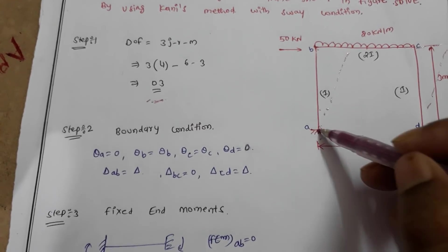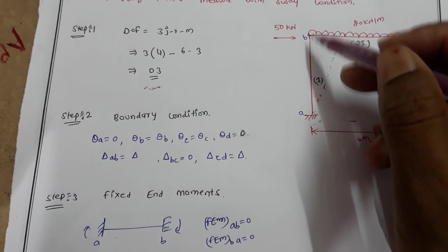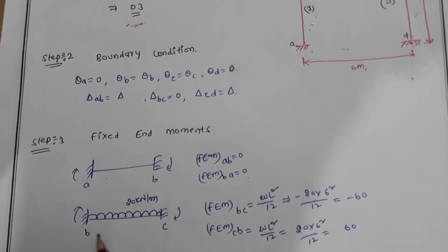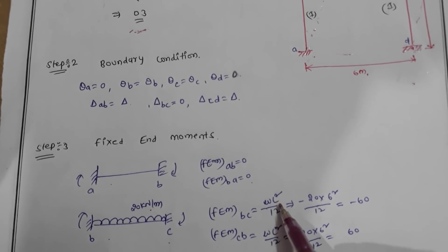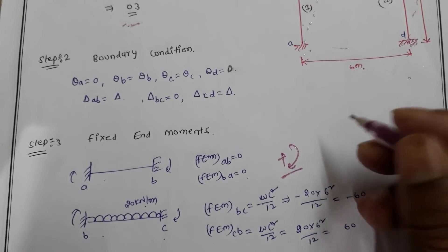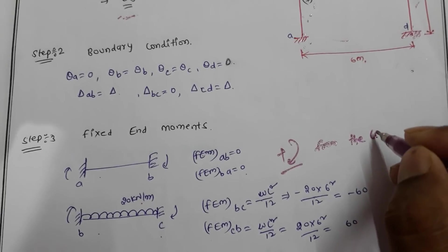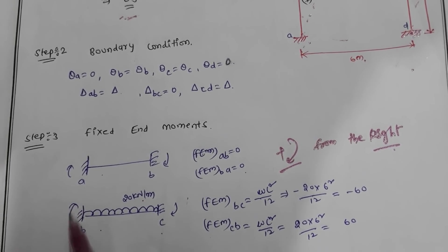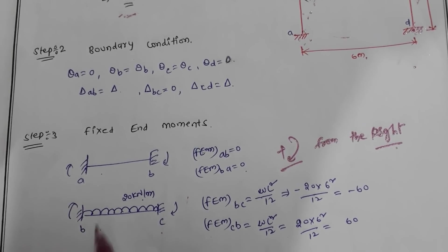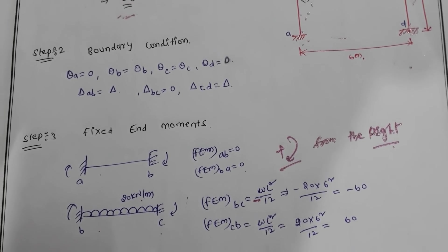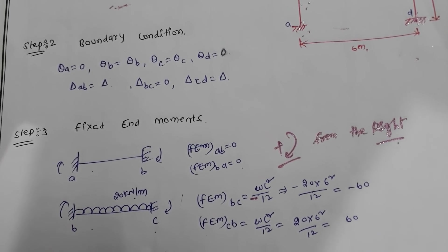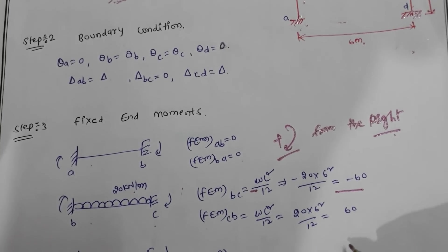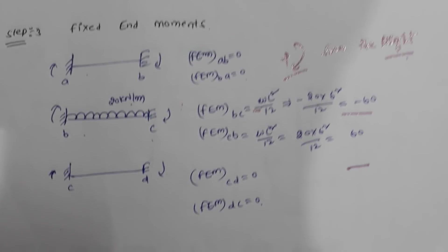Step 3 is the fixed end moment condition. For member A-to-B, there is no external loading, so the fixed end moments are 0. For B-to-C there is a uniformly distributed load: fixed end moment equals wL²/12. Taking clockwise rotation as positive from the right gives minus 60 kNm on one end and plus 60 kNm on the other. For member C-to-D there is no external loading, so fixed end moment is zero.